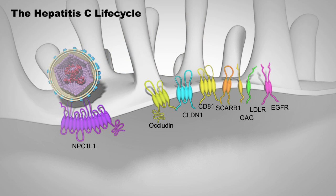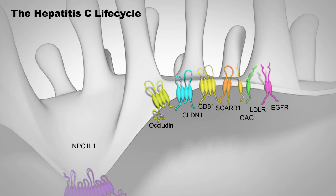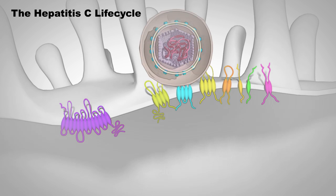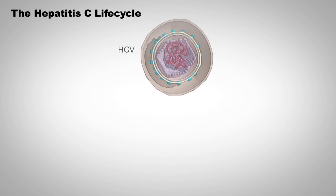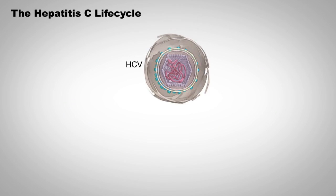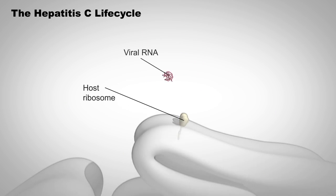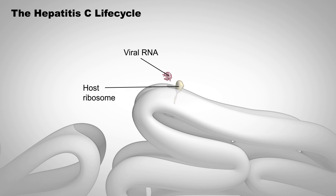Once bound, HCV is internalized through endocytosis. The plasma membrane folds inward, bringing HCV into the cell. HCV then travels through the cell cytoplasm to the rough endoplasmic reticulum.